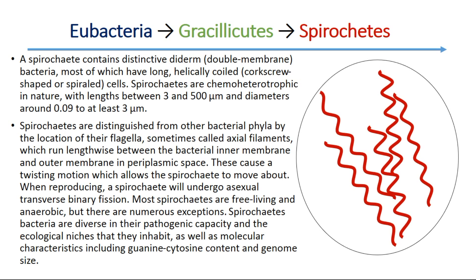When reproducing, spirochetes undergo asexual transverse binary fission. Most spirochetes are free-living and anaerobic, but there are numerous exceptions. Spirochetes bacteria are diverse in their pathogenic capacity and the ecological niches that they inhabit, as well as molecular characteristics including guanine-cytosine content and genome size.